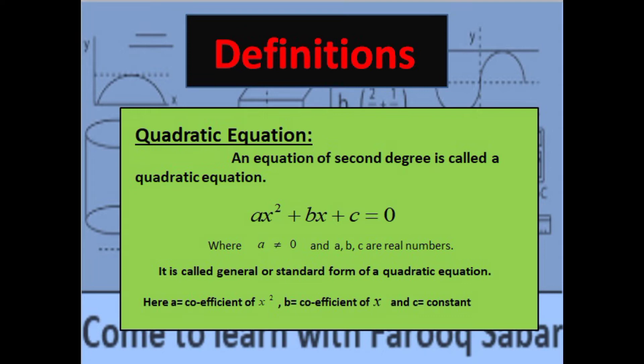It is called a second degree equation. When the power of the variable is 2, it is called a quadratic equation. Here a, b, c are all real numbers, where a, b, c are real numbers and a is not equal to zero. Remember that a will never be zero.